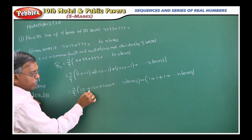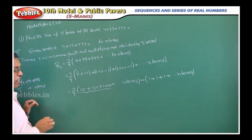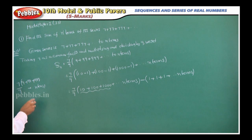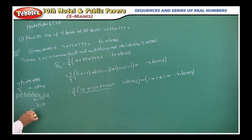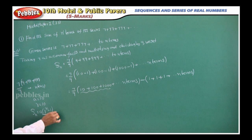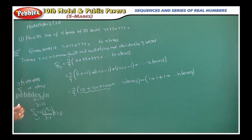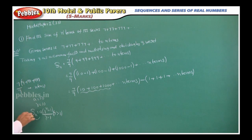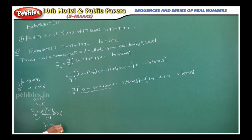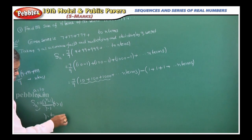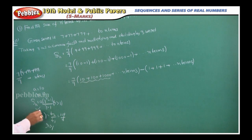Now, this series (10 plus 100 plus 1000 plus dot dot dot) forms a geometric progression with first term A equal to 10 and common ratio R equal to 10. There is a formula to find the sum of n terms: A into (r to the power n minus 1) divided by (r minus 1), when r is greater than 1. If the common ratio is less than 1, you use A into (1 minus r to the power n) divided by (1 minus r). Here, the common ratio R equals T2 by T1, which is 100 divided by 10, equal to 10 — so it is greater than 1, and we use the first formula.